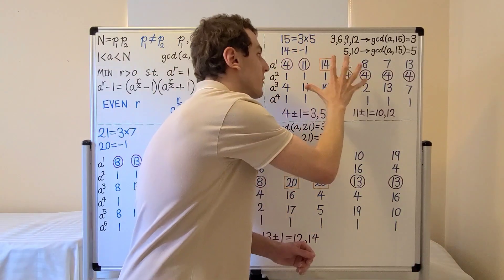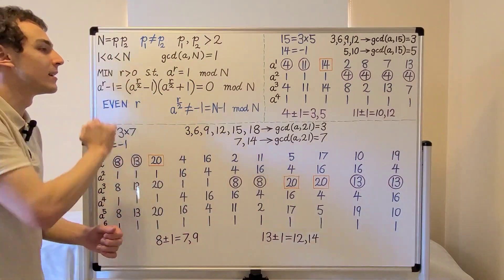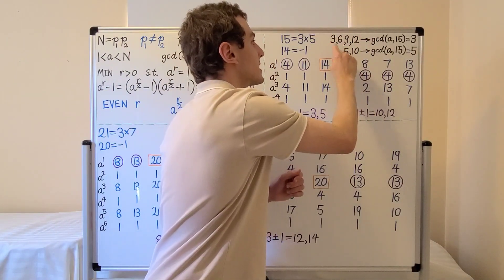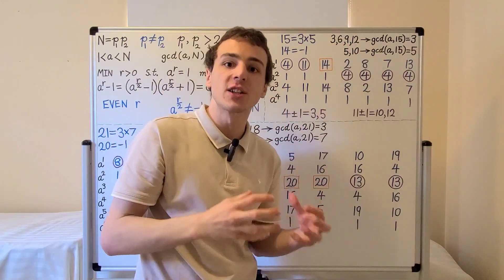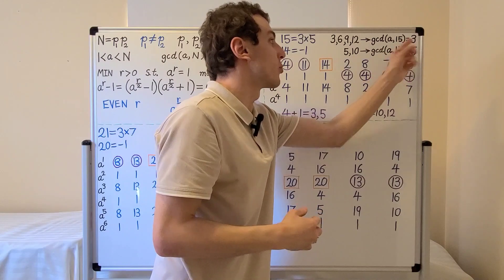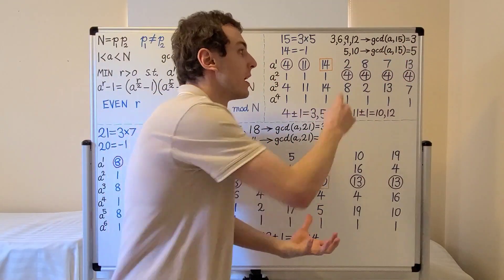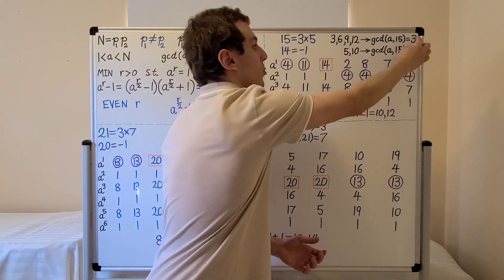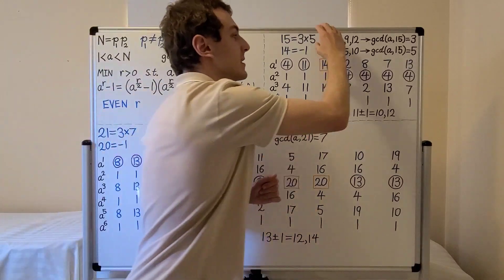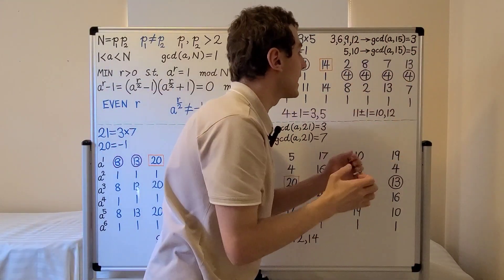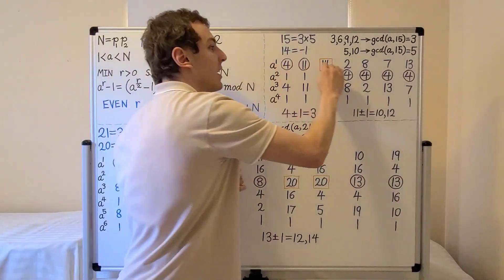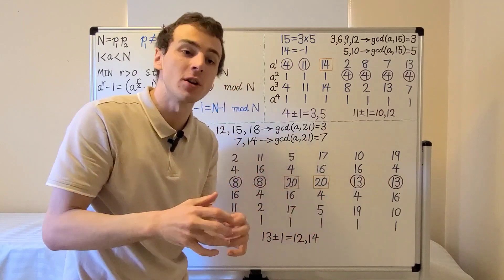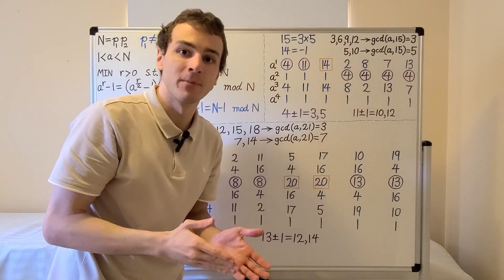For n=15, there are several options for choosing a. If we choose a multiple of 3 — that's 3, 6, 9, or 12 — computing the GCD with 15 gives 3. If we choose a multiple of 5 — either 5 or 10 — the GCD gives 5. Dividing 15 by either prime factor gives the other. These are lucky scenarios. But if we choose a value that is co-prime with 15, those values share no common factor besides 1 with 15.